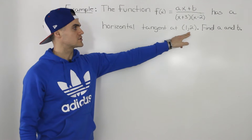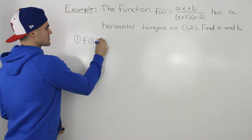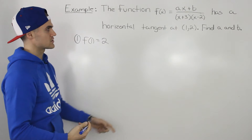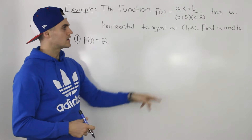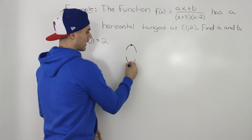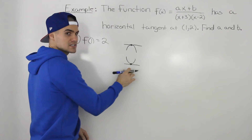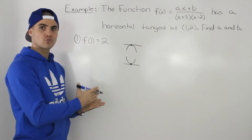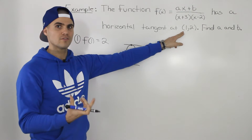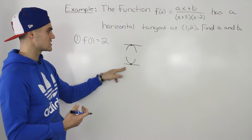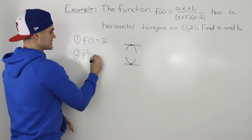Because we know that the coordinate (1, 2) is going to be on this function, one of the equations we can make is f(1) = 2 — at an x value of one, a y value of two occurs. We're also told the function has a horizontal tangent at this coordinate, and a horizontal tangent always occurs at either a maximum or minimum value, meaning its slope is zero. The derivative gives us the slope of the tangent at a specific x value, so at x = 1, f'(1) = 0. That is our second equation.